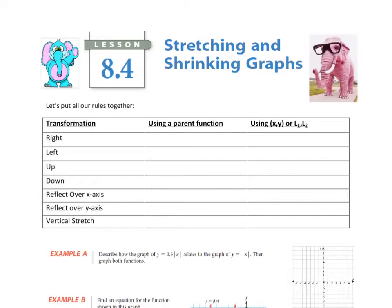Looking at transformations using x, y, and L1 and L2, we add or subtract the actual number we want to move. So if I'm looking at x, y, and I'm moving to the right, I'm going to have x plus a value — let's say a — comma y. It actually has a plus because I'm moving to the right.